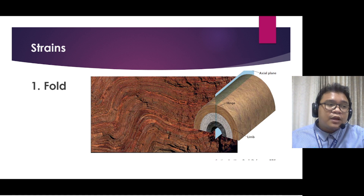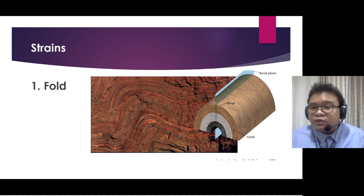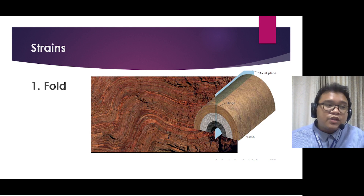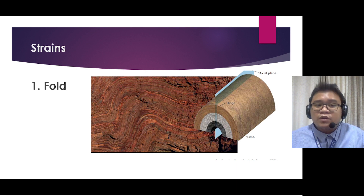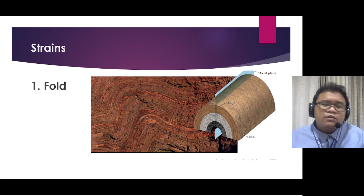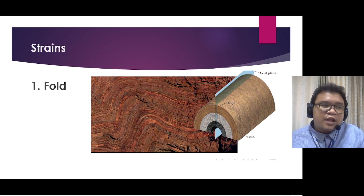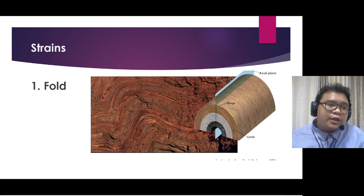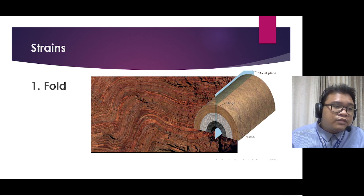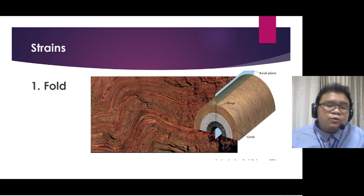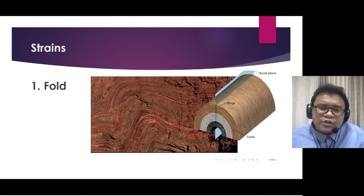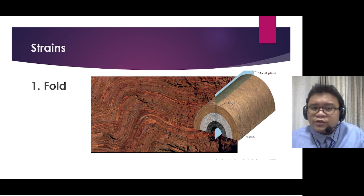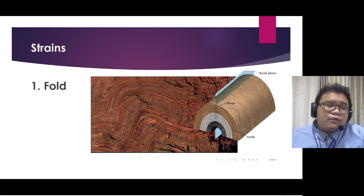As stress happens, strain also happens. If stress is applied to rock, rocks can be deformed, and any change in the shape or volume of the rock that results from the stress is what we refer to as strain. In terms of strains we have different types — for brittle strain it appears as cracks or fractures, but for ductile strain it responds to stress by bending or deforming. There are different factors that affect the strain of the rocks, such as temperature and pressure.